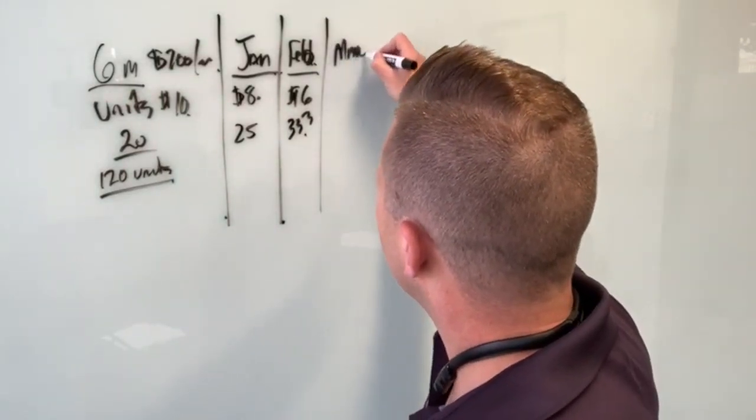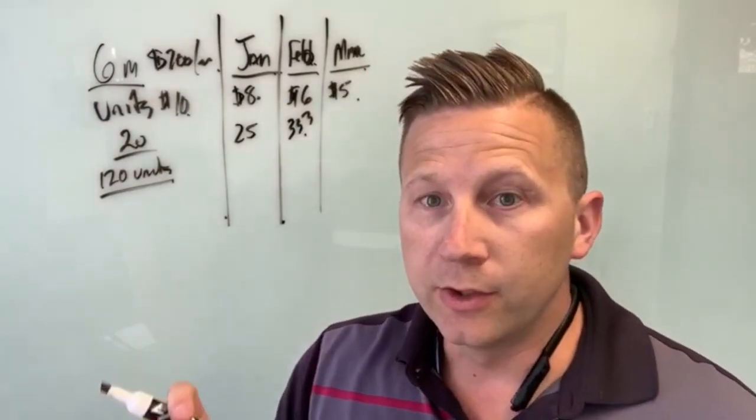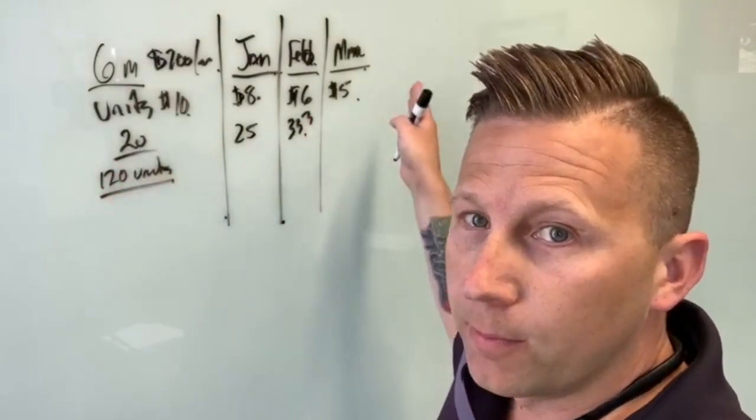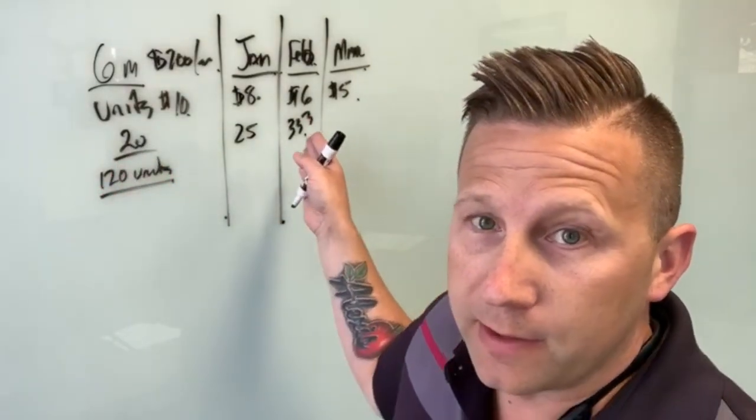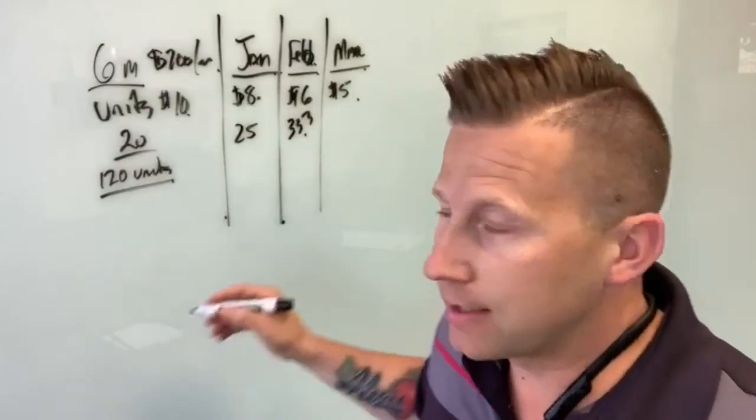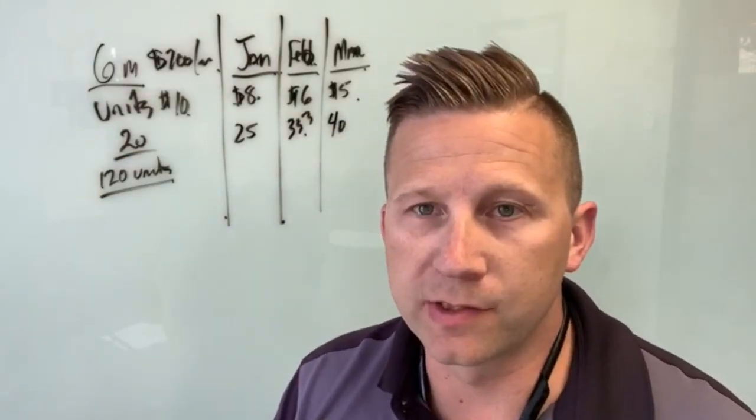Then March rolls around. March is not starting off very fun. Let's say we drop down to a five dollar unit. You'd be looking at the units that you purchased at 10 bucks going, 'Oh my goodness, it's worth half now what it was.' But there's a positive in this: you just purchased 40 units for the 200 bucks that used to buy you 20 units.